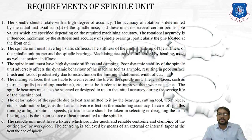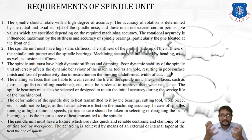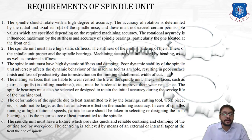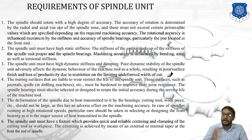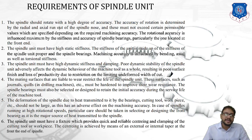To summarize the six important requirements: first, high degree of accuracy; second, high static stiffness; third, high dynamic stiffness and damping; fourth, hardening of spindle surfaces to improve wear resistance and service life; fifth, selection or design of front-end bearings to reduce heat transmission; and sixth, fixtures for quick and reliable centering and clamping. In our next session we will start with the design procedure of the spindle unit.